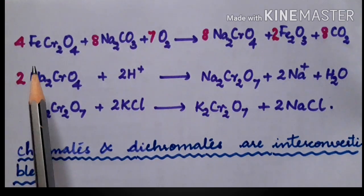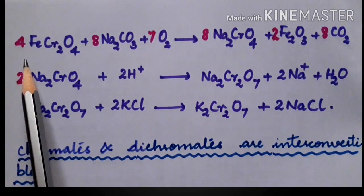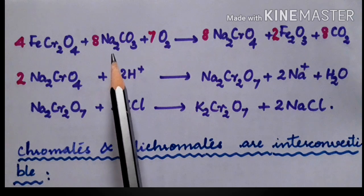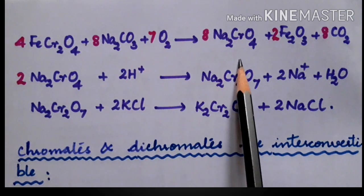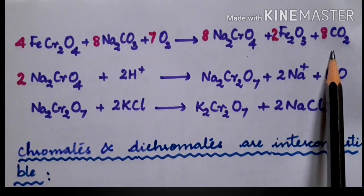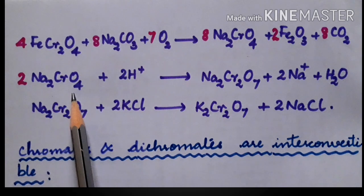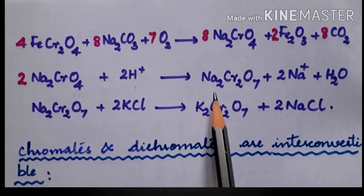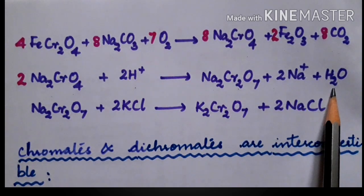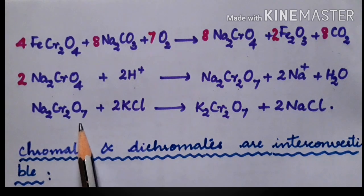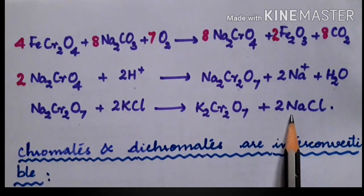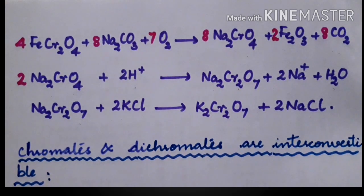These are the relevant equations for the preparation of potassium dichromate from chromite ore. First, chromite ore on treatment with sodium carbonate in the presence of air forms sodium chromate along with ferric oxide and carbon dioxide. This sodium chromate on acidification with sulfuric acid forms sodium dichromate along with sodium ions and water. In the next step, sodium dichromate is treated with potassium chloride to form potassium dichromate along with sodium chloride.